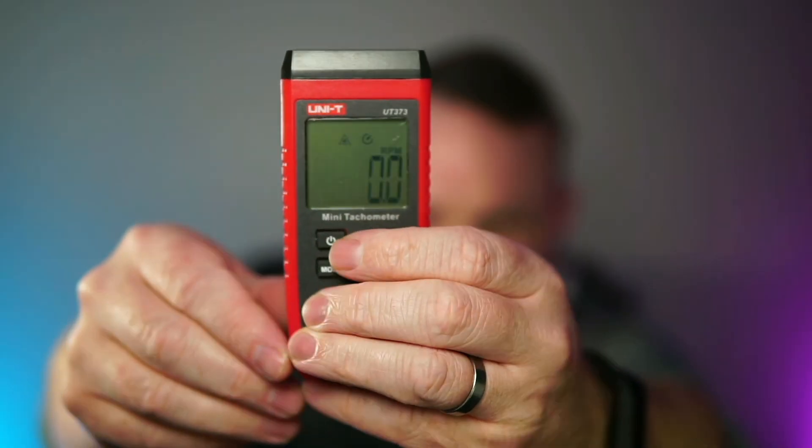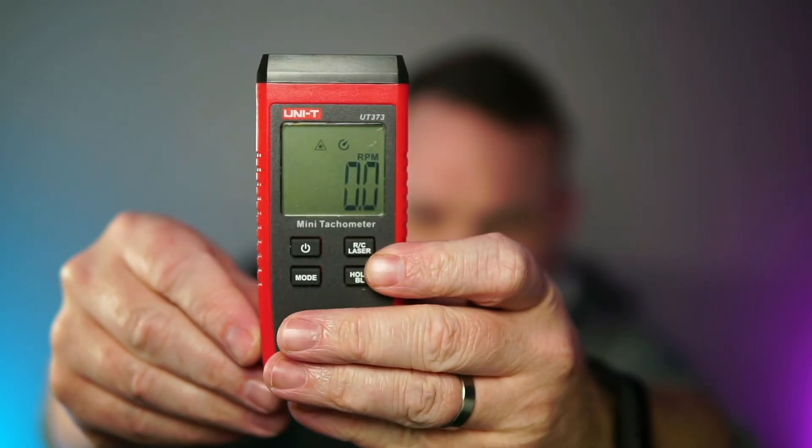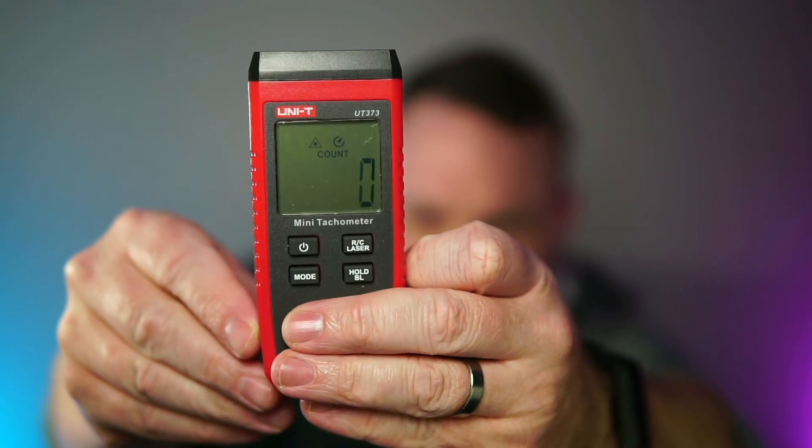So it has this on-off button, you just press it to turn it on, and right now it's measuring RPM. But if I press this button, it will do a count.